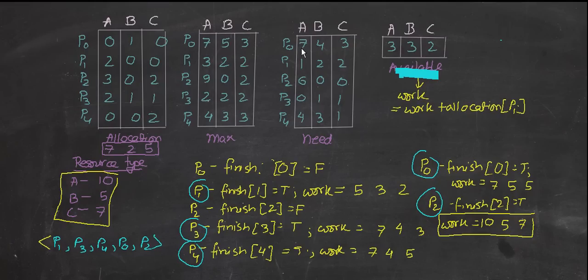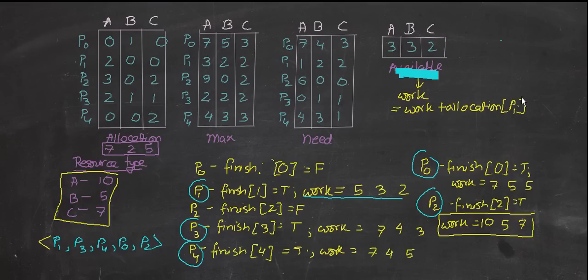Moving to P1 — P1 needs 1,2,2 and we have 3,3,2 available, so the need is less than available and P1 can be executed. We update the work array: work equals work plus the allocation of that process. Since work starts equal to available (3,3,2) and P1's allocation is 2,0,0, the new work becomes 5,3,2.